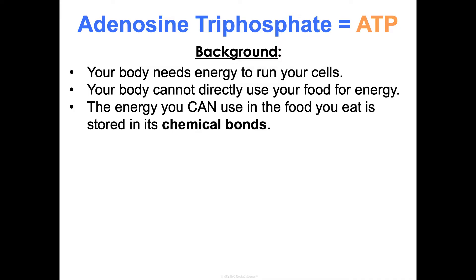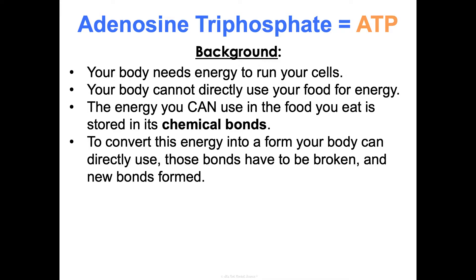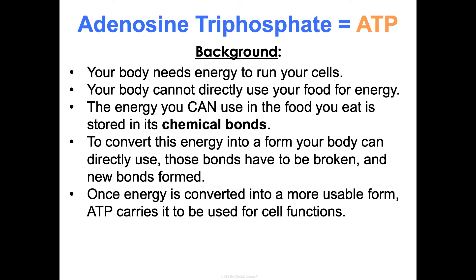The energy you can use from the food you eat is stored in its chemical bonds. What your body needs to do is convert that energy in those bonds into a form that it can directly use. We need to break those bonds and make new bonds that store the energy in a way that it can be more directly used. Once that energy gets converted into a more usable form, ATP is what's carrying it within its bonds to be used for cell functions.